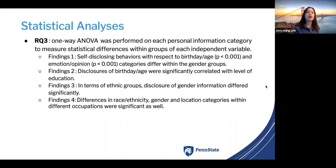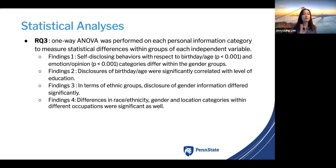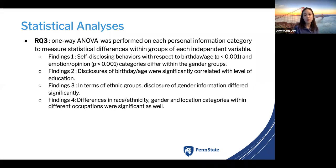For research question three, we ran different types of one-way ANOVA for each personal information category. We found that self-disclosing behaviors with respect to birthday and age, or education and opinion categories, differ within gender groups. Disclosures of birthday and age were also significantly correlated with education level. In terms of ethnic group, disclosure of gender information differed significantly. Additionally, differences in race and ethnicity, gender, and location categories within different occupations were significant as well.